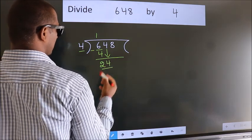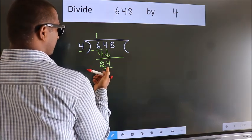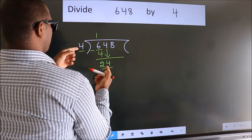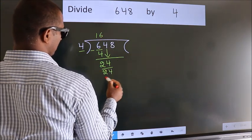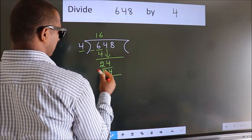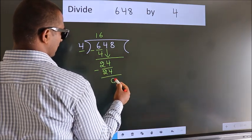Down, so 24. When do we get 24 in four table? Four six is 24. Now we subtract. We get zero.